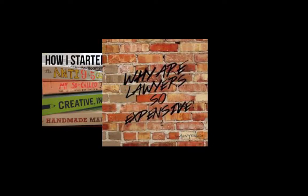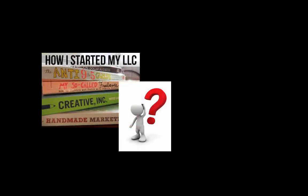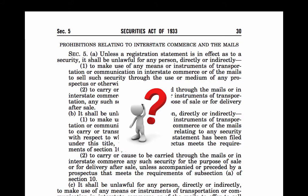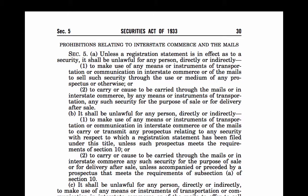The simplest answer to that question is to look at how much registration typically costs. The latest estimate from 2016 is that the average accounting fees for going public and completing an IPO was just under a million dollars, and the average legal fees were $1.7 million. So clearly that's not an expense that small companies can undertake. Therefore something else has to be going on here — it can't be that every sale of a security has to be registered. But isn't that what Section 5 says?